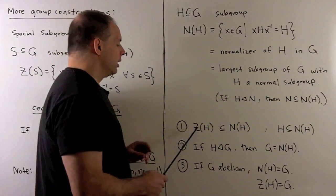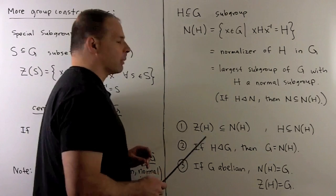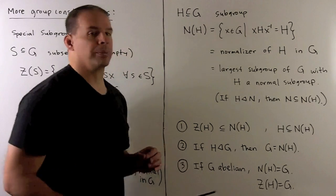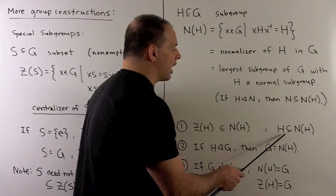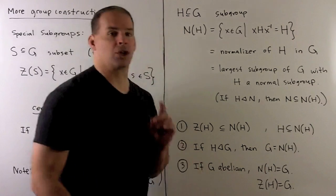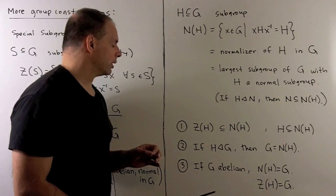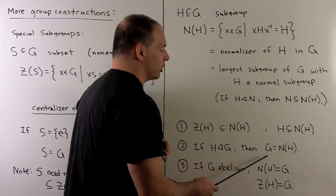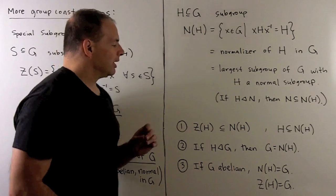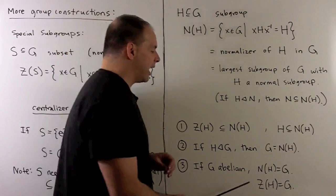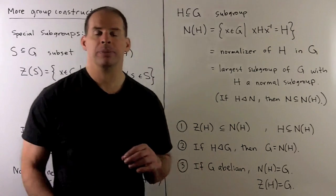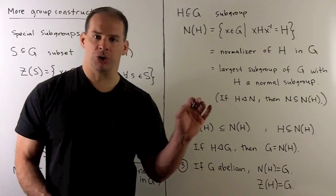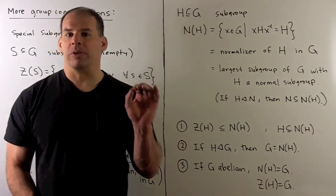Some facts: the centralizer of H is always contained in the normalizer of H. We also have that H itself is contained in the normalizer of H - that's just closure under multiplication. If H is a normal subgroup in G, then the normalizer is all of G. If G is abelian, then the normalizer and centralizer of H both equal G. When we're working with abelian groups, centralizers and normalizers are not so interesting - they play more of a factor in non-abelian groups.